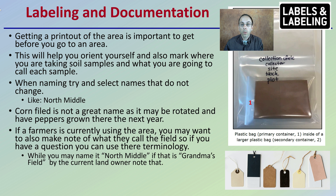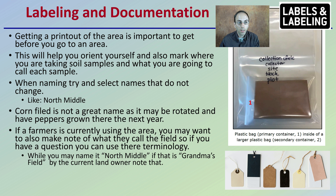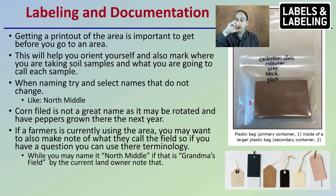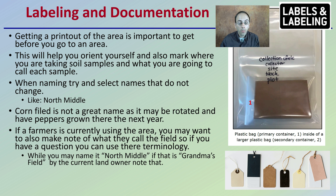As the grower, it's important to go through the process of labeling and documentation. Getting a printout of the area is important before you go into an area. This will help you orient yourself, mark where you're taking soil samples, and know what you're going to call each sample. When naming, try to select names that do not change — for example, 'north' and 'middle,' referring to the northern area and the middle section of that particular field. If you're labeling something 'cornfield,' this is not a great name because it might be rotated and have peppers grown the next year. Stay away from crop names. If a farmer is currently using an area, you may also want to make note of what they call the field so you can use their terminology.